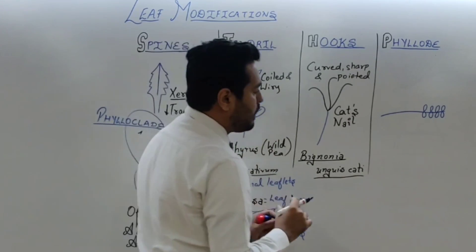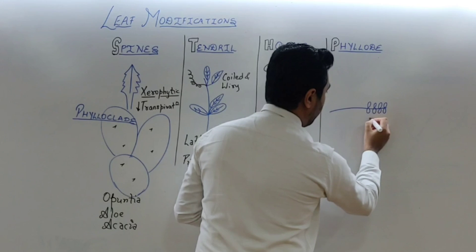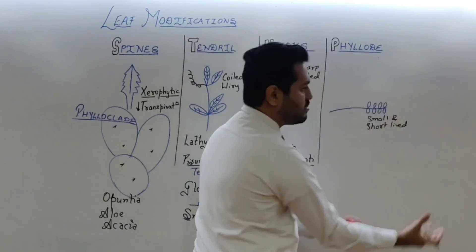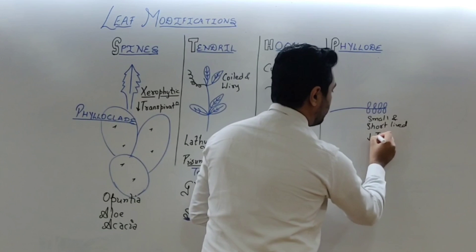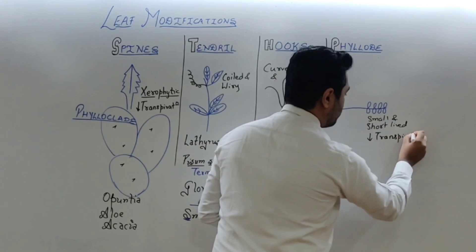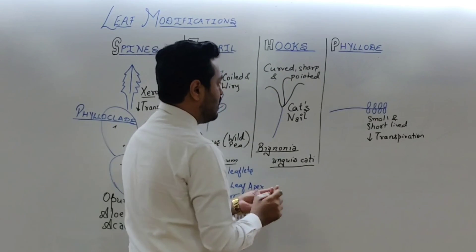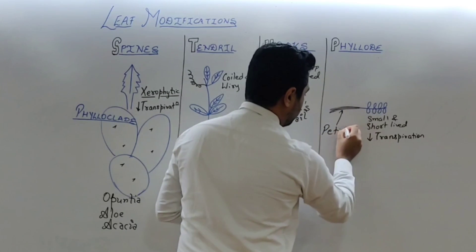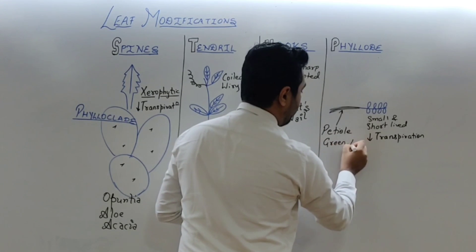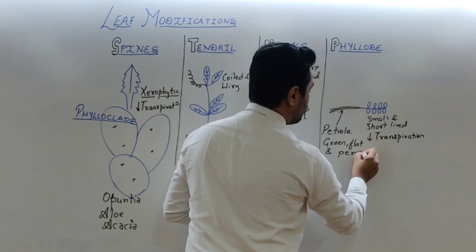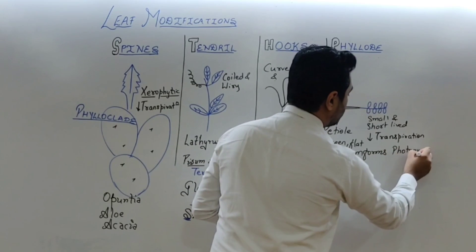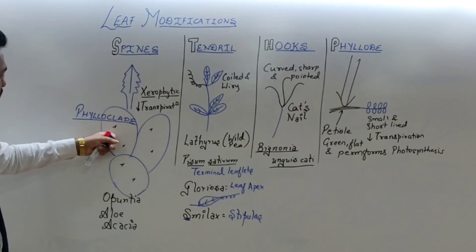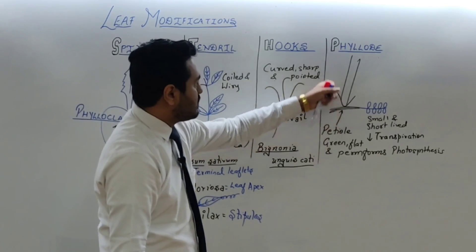Next is phyllode. In phyllode, in some plants the leaflets are small and short-lived — after some time they fall off. This reduces transpiration. But then who will do photosynthesis? The photosynthesis is performed by the petiole — the stalk of the leaf. So when the petiole becomes green, flat, and performs photosynthesis, such a petiole is known as a phyllode. Remember: if the stem performs photosynthesis it is a phylloclade; if the petiole performs photosynthesis it is a phyllode.